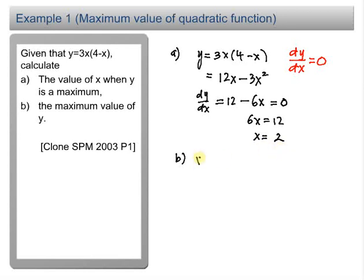What we need to do here is to substitute x equal to 2 into the original equation, y equal to 12x minus 3x squared. When x equal to 2, y equal to 12 times 2 minus 3 times 2 squared.